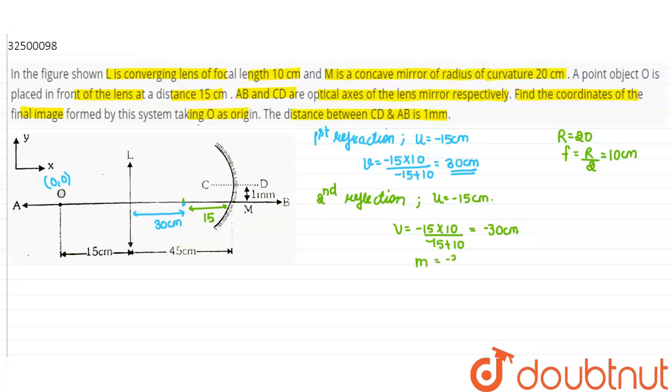Magnification will be minus 30 by minus 15, which is minus 2. The coordinates of the image are minus 30.